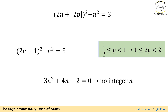Finally, we consider the case where p is greater than or equal to 1/2 and less than 1. Then 2p is between 1 and 2, so floor of 2p equals 1. The equation becomes the quantity 2n plus 1, squared, minus n squared equals 3. Expanding and solving this quadratic equation for integer values of n, we find that there are no integer solutions. So there is no solution in this case.